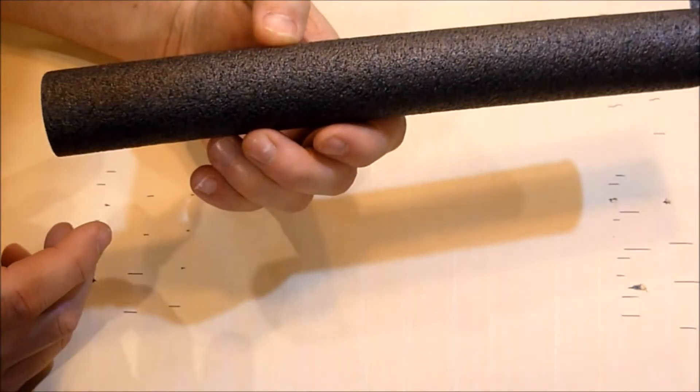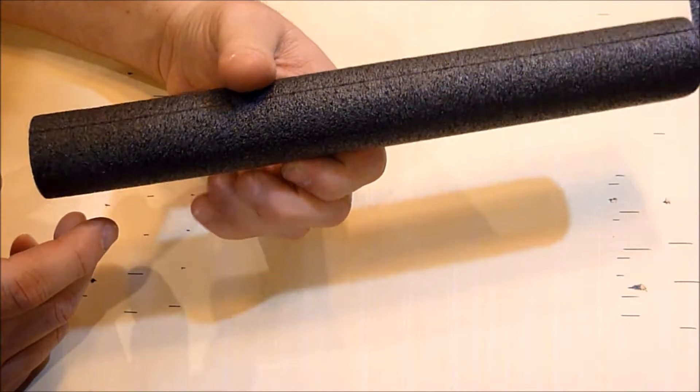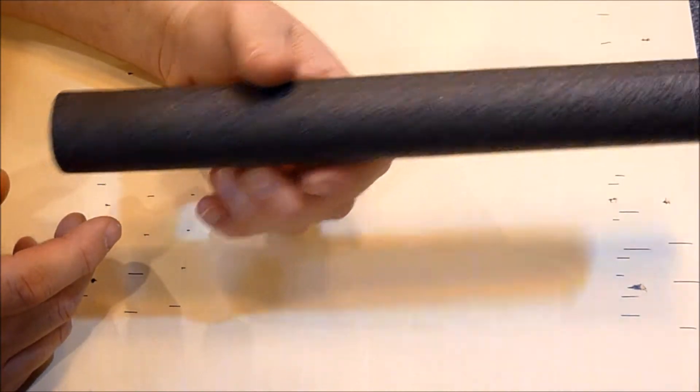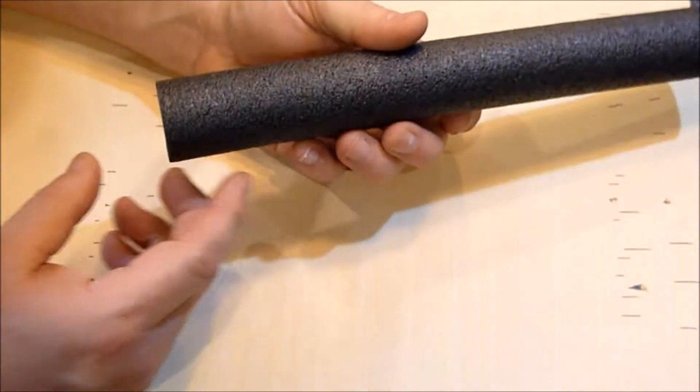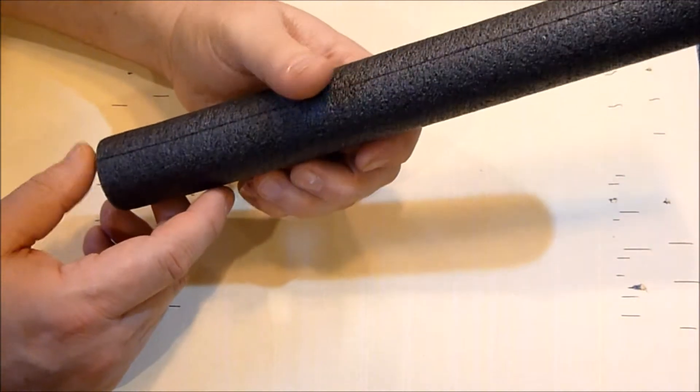To make your track, I just use foam insulation for pipes that you can get at Lowe's or Home Depot or any hardware store, and a six-foot length of this foam costs about 70 cents.